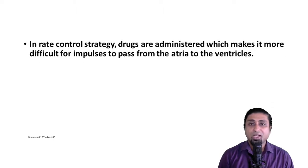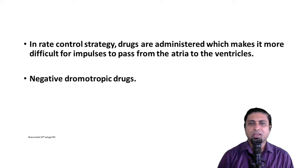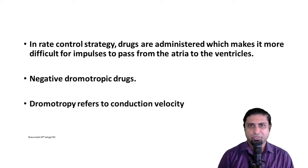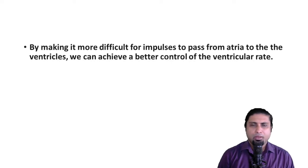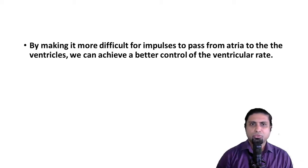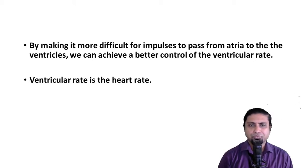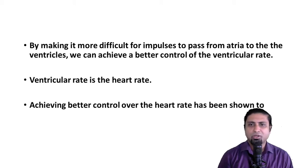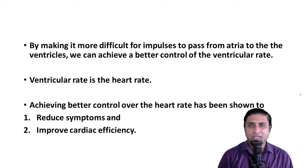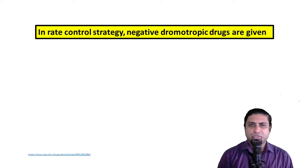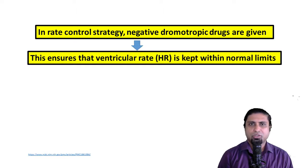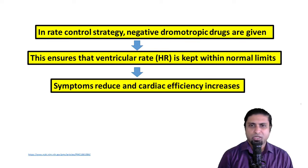In a rate control strategy, drugs are administered which make it more difficult for impulses to pass from the atria down to the ventricles. Dromotropy refers to conduction velocity. By making it more difficult for impulses to pass through, we achieve better control of the ventricular rate — and it's important to remember that ventricular rate is the heart rate. By achieving better control over heart rate, we reduce symptoms and increase the efficiency of the heart as a pump. So in rate control strategy, we administer negative dromotropic drugs to keep the ventricular rate within normal limits.